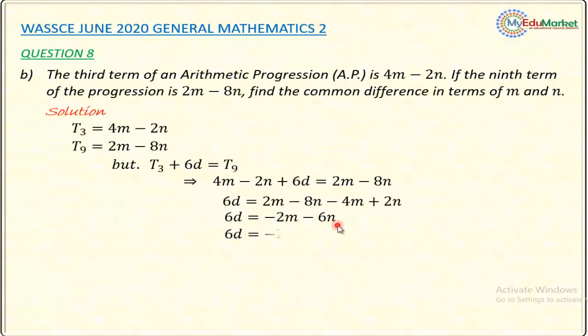Factoring 2 from the right-hand side, I have minus 2 times M plus 3N. And I'll now divide both sides by 6, the coefficient of D, because I'm interested in making D the subject.